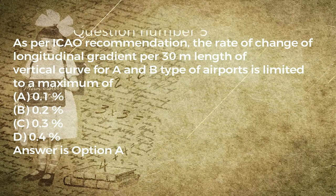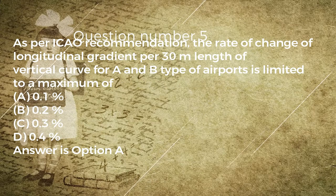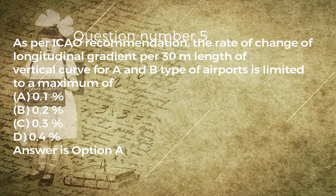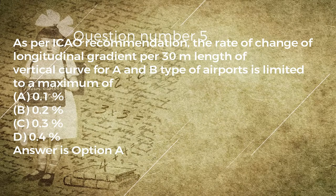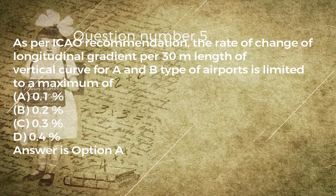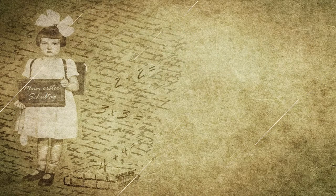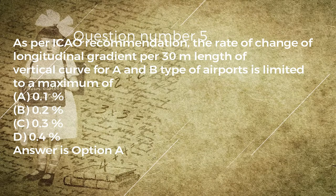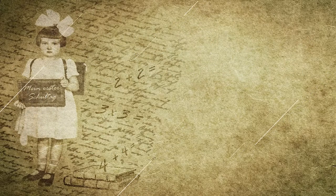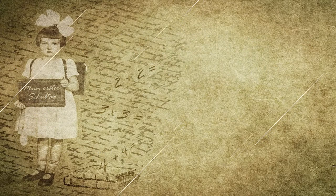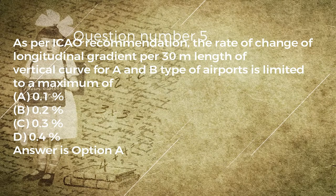Question number five: as per ICAO recommendation, the rate of change of longitudinal gradient per 30 M length of vertical curve for A and B type of airports is limited to a maximum of: A) 0.1%, B) 0.2%, C) 0.3%, D) 0.4%. Answer is option A.